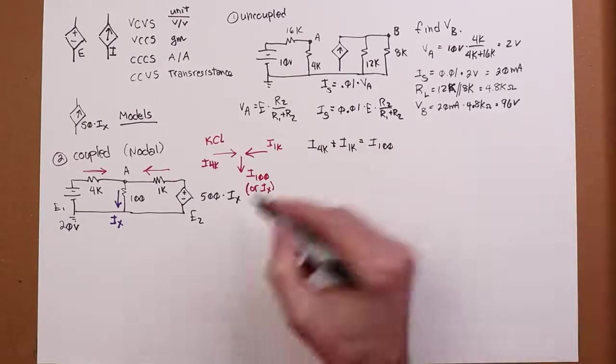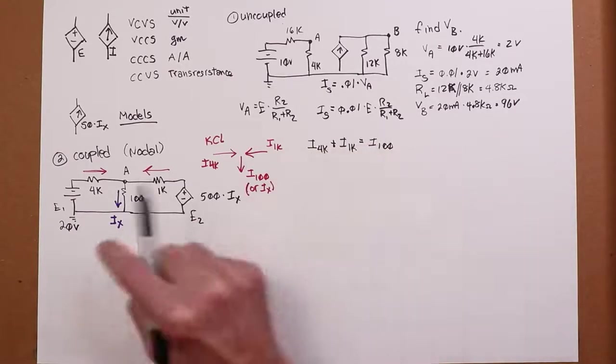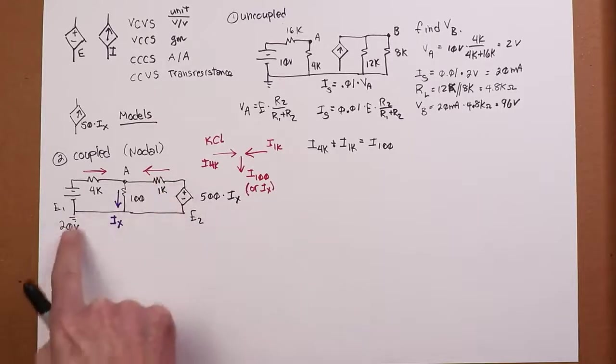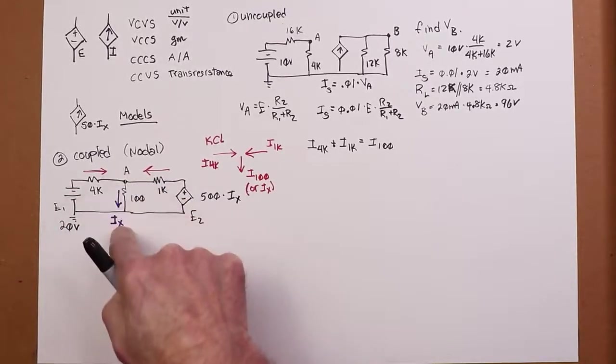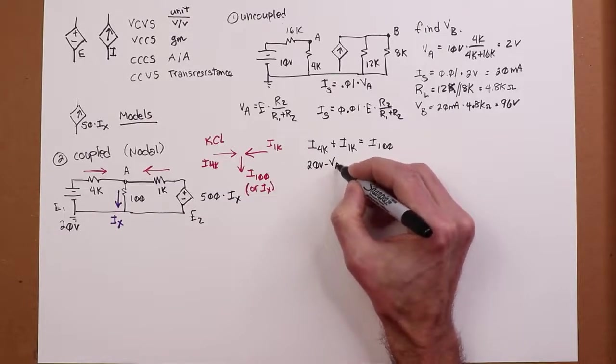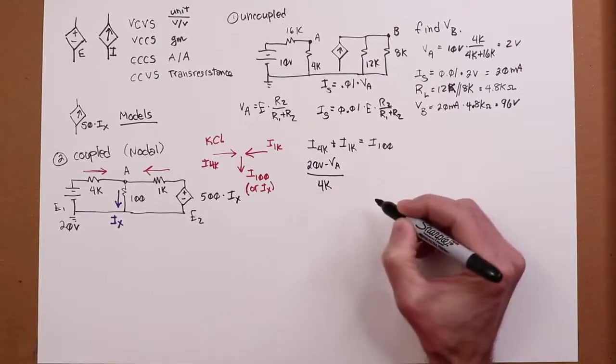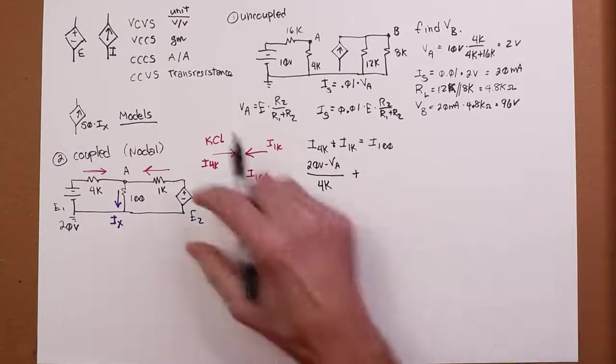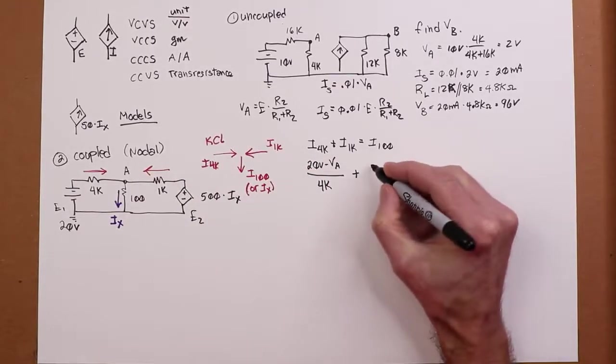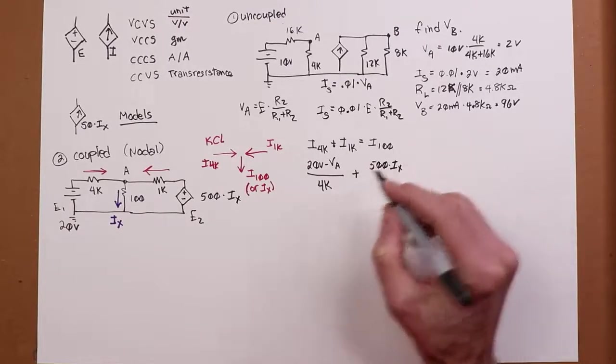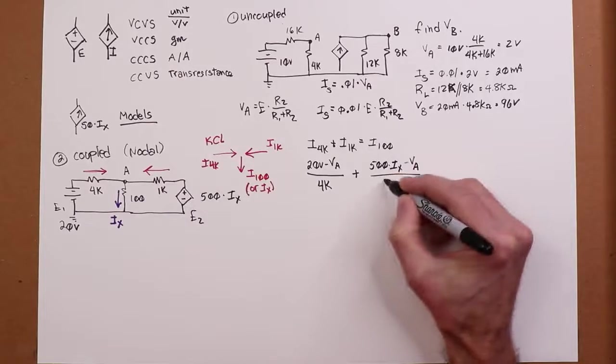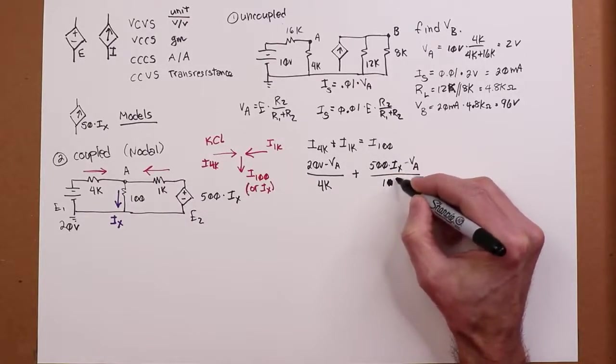Now, write each of these currents in terms of their Ohm's law equivalent. What is I of 4k? Well, it's the voltage across the 4k divided by 4k. The voltage across it is 20 volts on this side minus whatever VA is. That's the potential difference. Divide that by the resistance of 4k. So, we've got 20 volts minus VA divided by 4k for that piece of it. What is the current through the 1k? Well, it's the voltage on this side minus VA divided by 1k. What's the voltage on this side? It's 500 Ix. So, you take 500 Ix. We don't know what Ix is, but we're going to minus the VA. So, that gives us the potential. Divide by 1k.